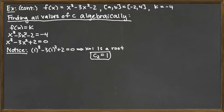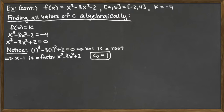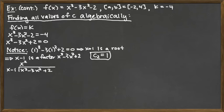Since x = 1 is a root, the factor (x minus 1) is a factor of x cubed minus 3x squared plus 2. We can perform long division: (x minus 1) divided into that cubic. We ask, x times what gives x cubed? That's x squared. Multiplying: x squared times x is x cubed, and x squared times negative 1 is negative x squared.